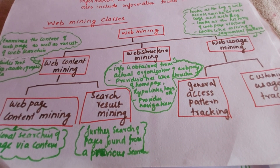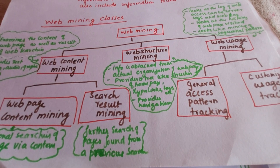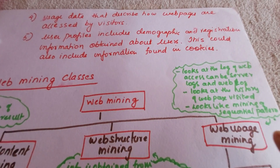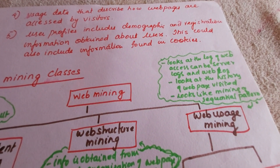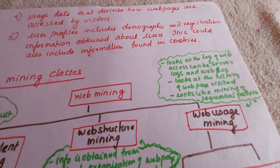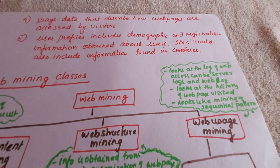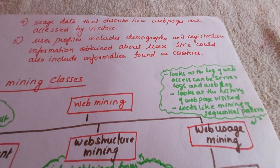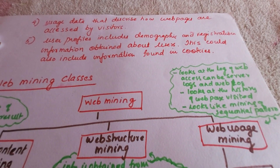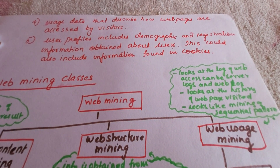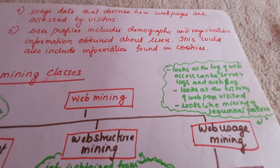Web structure mining provides a tree-like structure of the home page, hyperlinks, and tags, and it provides navigation. Web usage mining looks at the log of web access — it can be server logs or web logs — and examines the history of web pages visited. It looks at mining sequential patterns; for example, patterns can be clustered based on their similarity to group users based on similar access behavior. It is divided into two types: general access pattern tracking and customized usage tracking.